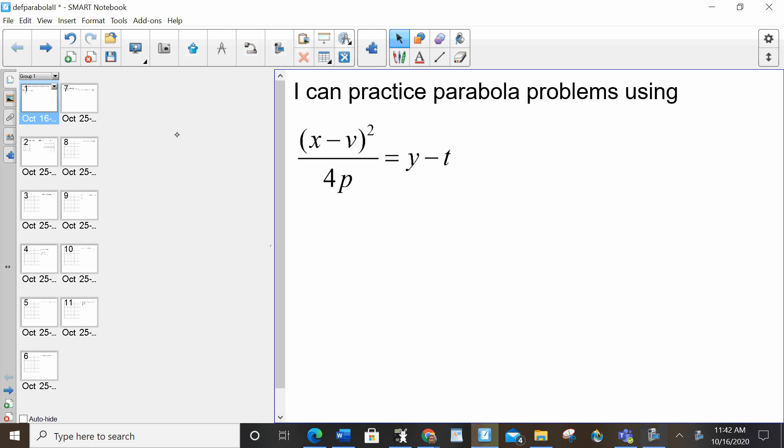Okay, today we can practice parabola problems using x minus b squared over 4p equals y minus t. So this is basically just practice with what we did last class, but there is going to be something new towards the end.